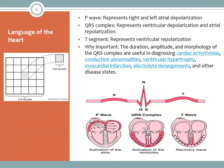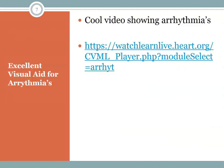The P wave represents right and left atrial depolarization. The QRS complex represents ventricular depolarization as well as atrial repolarization. The T segment represents ventricular repolarization. It is important to know the duration, morphology, and amplitude of each wave so you can identify if a patient is having a potentially deadly arrhythmia, a dangerous electrolyte imbalance, or a myocardial infarction.